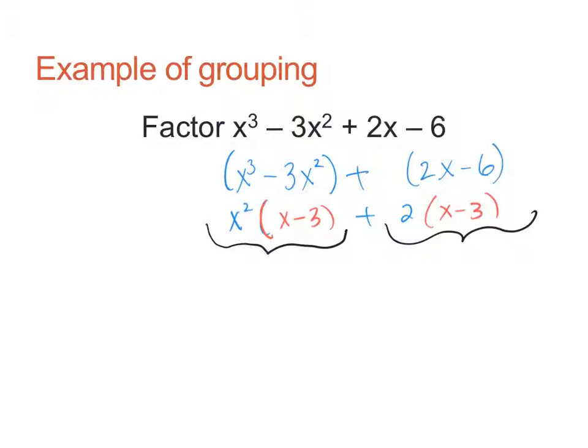So what do we do with the x minus 3? We distribute out the x minus 3, and what's left? x squared plus 2. So the x minus 3 got distributed out, and then x squared plus 2 is what's left. So your final answer is just x minus 3 times x squared plus 2.